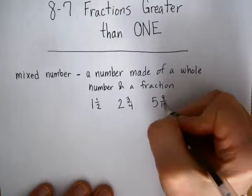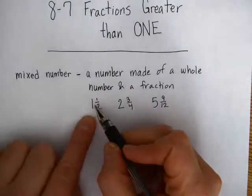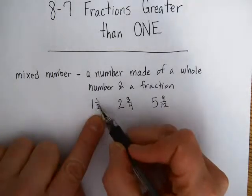These are all mixed numbers because we have at least one whole, and then we have a fractional part of another whole.